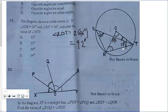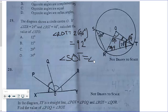Angle ROT equals 92 degrees. So now we subtract 92 from 180, which gives us 88, and each of these angles is 44 degrees. This whole angle is also 44 degrees. Since this whole angle is 44 and from here to this side is 29, angle SOT equals 44 minus 29, which gives us 15 degrees.